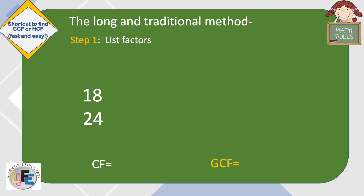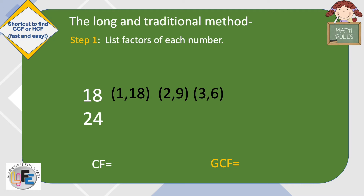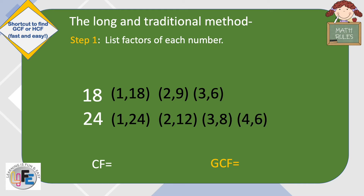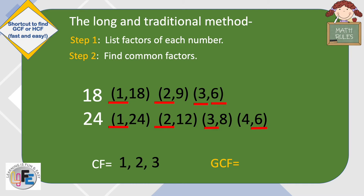I'll show you the long and traditional method first. To find GCF, you list the factors of each number, then find the common factors. From your list of common factors, the highest number is your GCF.